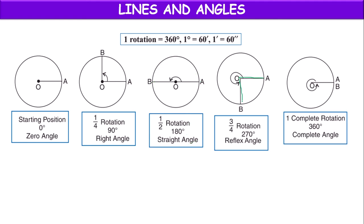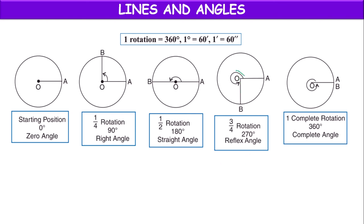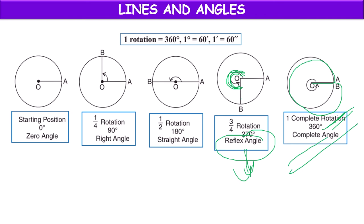If the ray has completed three-fourths of a rotation, that is three-fourths of 360 degrees equals 270 degrees. Since it is more than 180 degrees, it is called a reflex angle. Or if the ray has made one complete rotation and came back to position A, it is called a complete angle, which is 360 degrees.